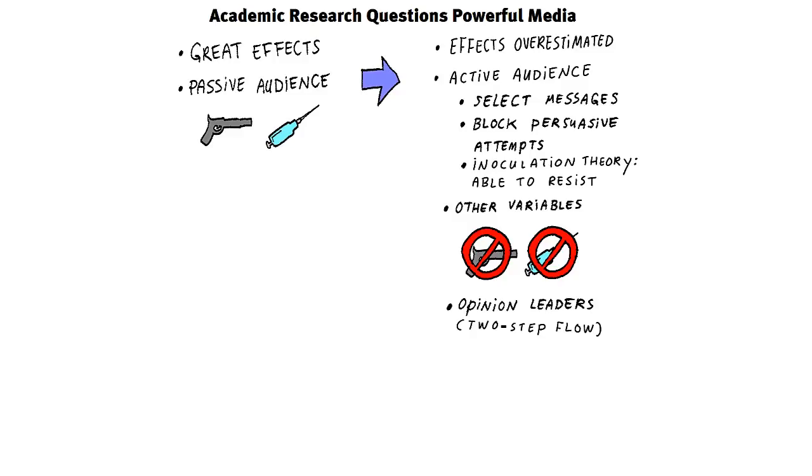A so-called two-step flow model was proposed, where people are influenced by opinion leaders. The media use of these opinion leaders was of course very different than the old powerful media model would suggest.